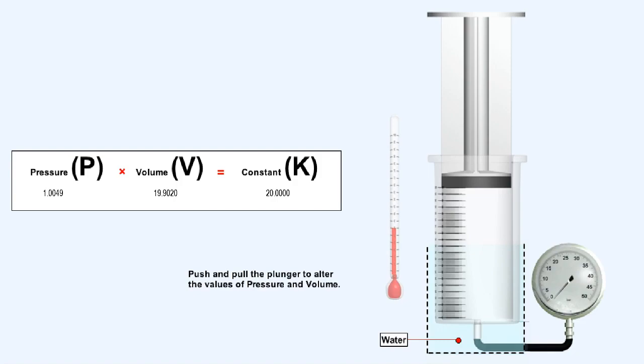You can see that by multiplying the volume by the pressure, the answer remains a constant. Hence, the product of the absolute pressure and volume of a given quantity of gas is constant, as long as the temperature of the gas does not change.